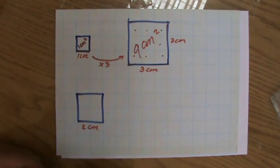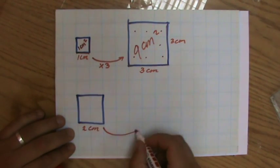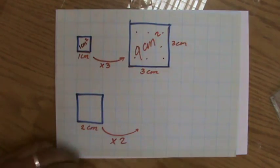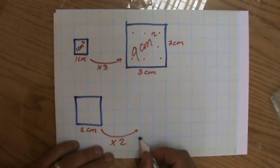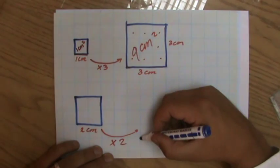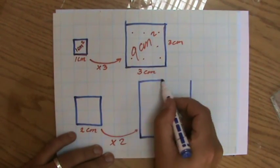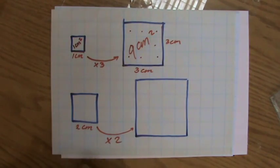One more example. I have a square of 2 cm. Let's make it bigger with a scale factor. Let's do 2. So the 2 cm is going to be 4 times 2. And 4 and 4 and 4. Okay. Now what is the area of the smaller triangle?